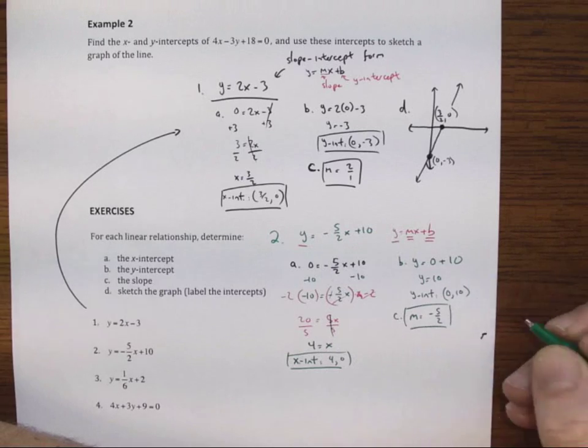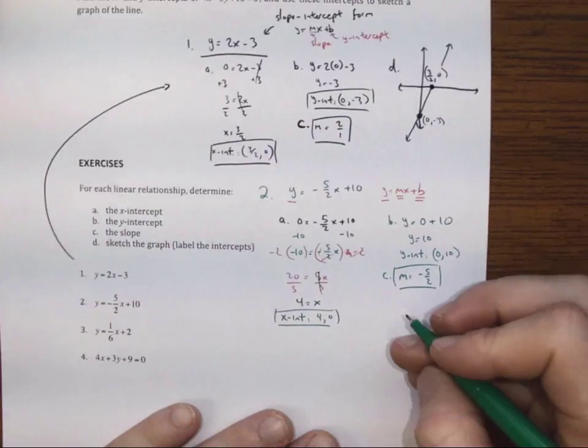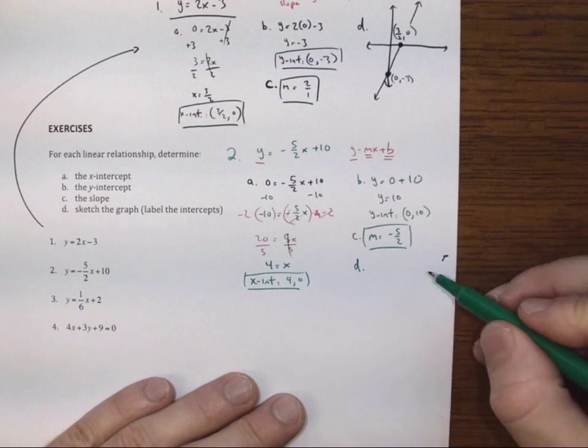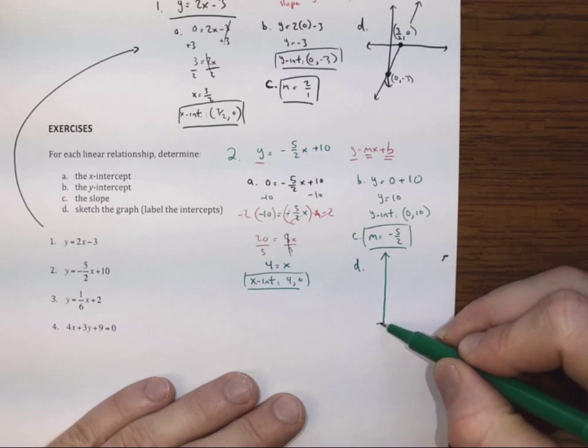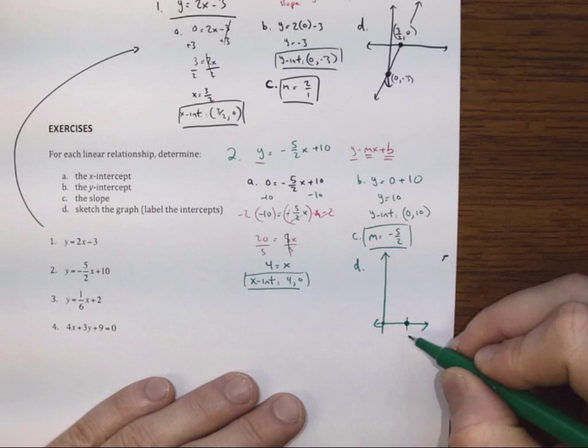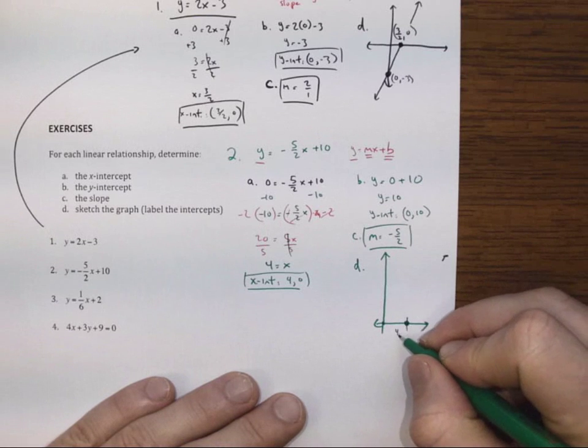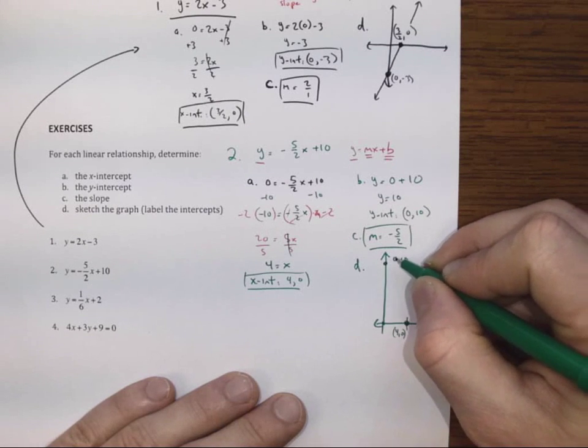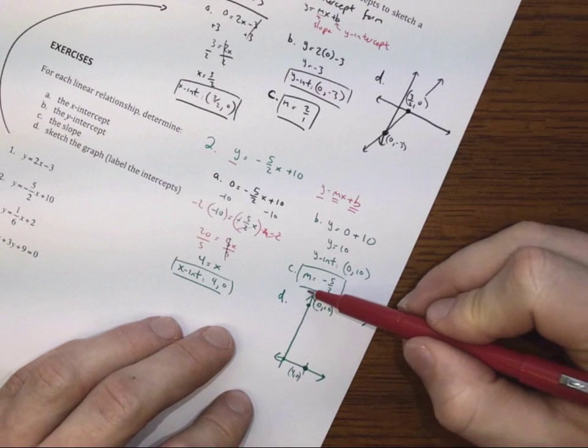And lastly, we'll give a little sketch. So with those intercepts the way they are, I think I'll apply to something like that. And so that gives me an x-intercept of 4, 0, y-intercept of 0, 10, and a line like so.